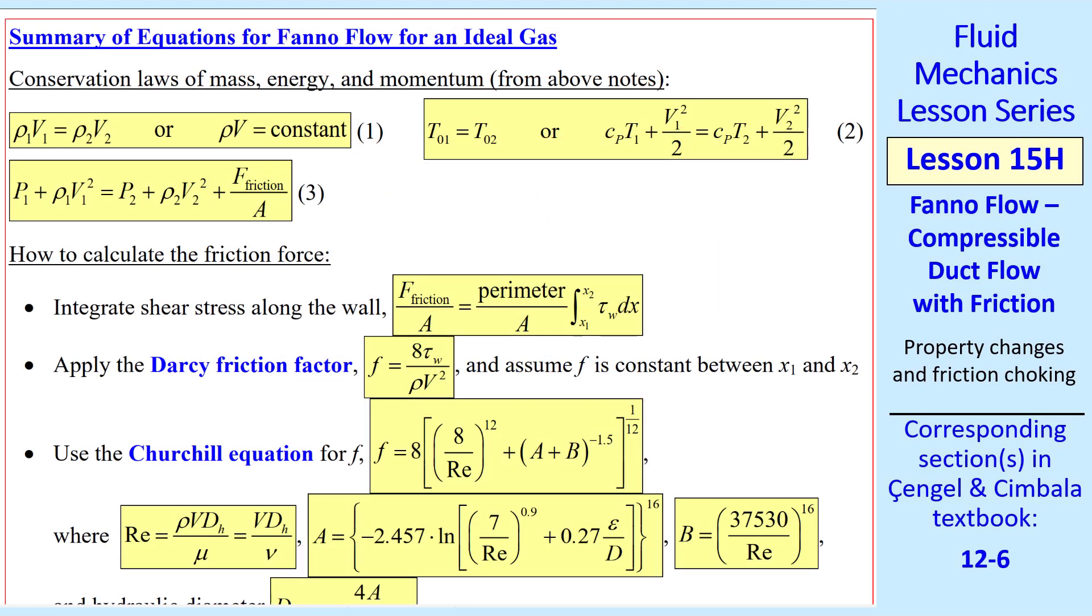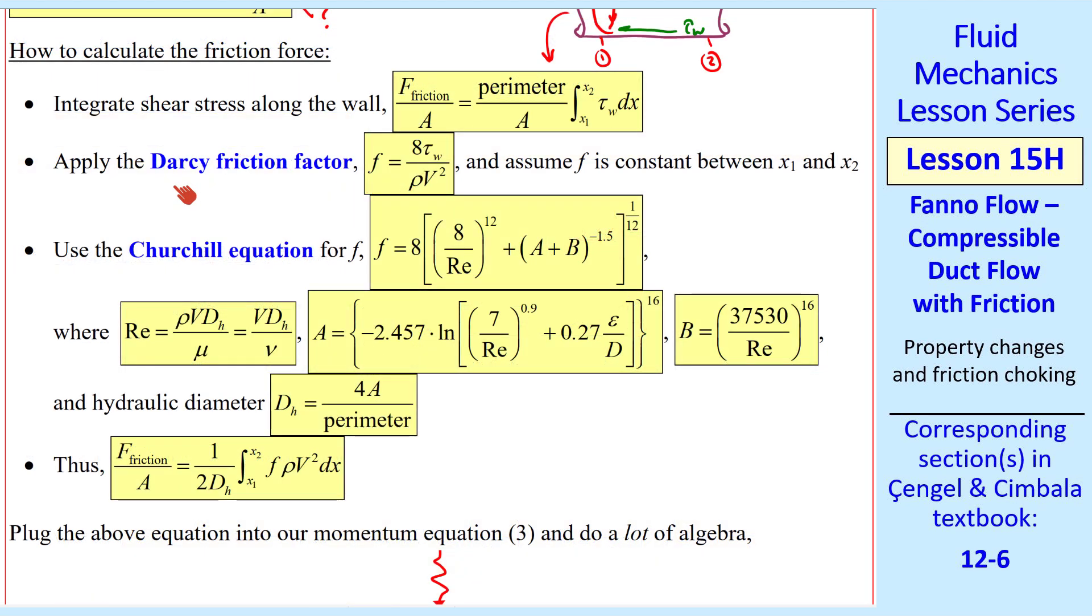I show here a summary of all the equations for Fanno flow for an ideal gas. Here's our mass equation, our energy equation, and our momentum equation. We need to do something about this friction force, however. How do we calculate it? Well, let's take a round section of pipe, for example. The shear stress along the wall is tau W, and this acts all around the circumference or perimeter of the pipe. So if we go from location 1 to 2, we integrate such that F friction over the area is the perimeter or circumference here over A times the integral from X1 to X2 of shear stress tau W dx. Now we recall from previous lessons the Darcy friction factor F, which is kind of a non-dimensional form of tau W, and we assume F is constant between X1 and X2.